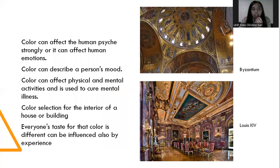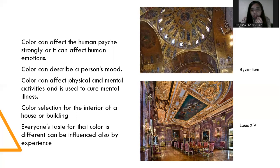Color can affect human physics strongly, or it can affect human emotion. Color can describe a person's mood and affect physical and mental activities. It is also used to cure mental illness. Color selection for the interior of a house or building matters — everyone's taste for color is different and can be influenced by our experience. For example, in Byzantine-style interiors, colors like gold, silver, and purple are used, creating a strong visual and emotional impact.